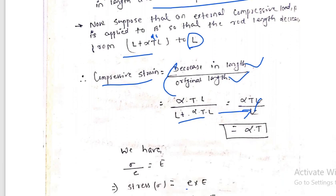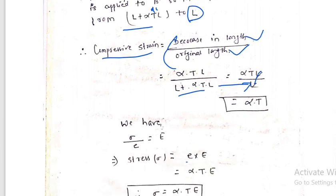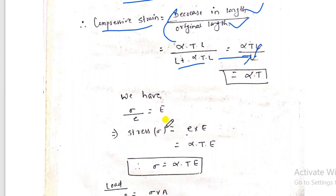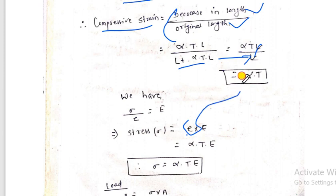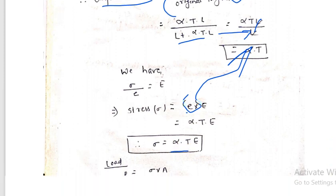What will be the thermal stress? Since Young's modulus E = stress / strain, we get stress = strain × E. The compressive strain is alpha × T, so the stress induced is alpha × T × E. The load can also be calculated as stress × area.